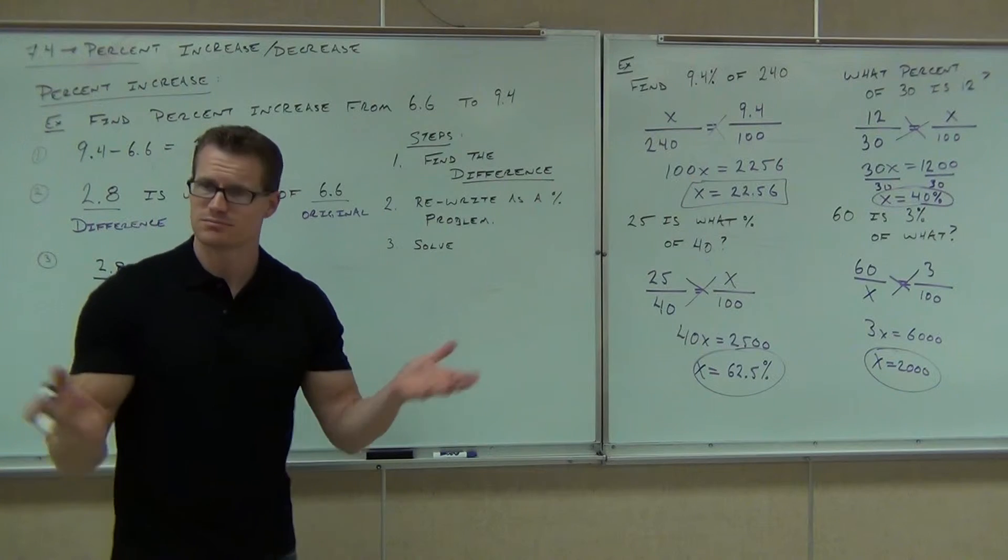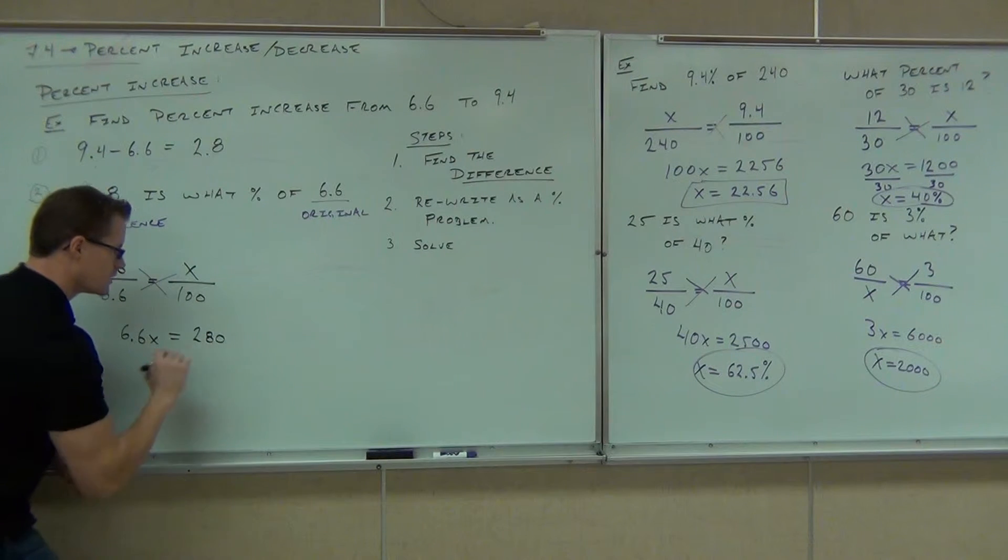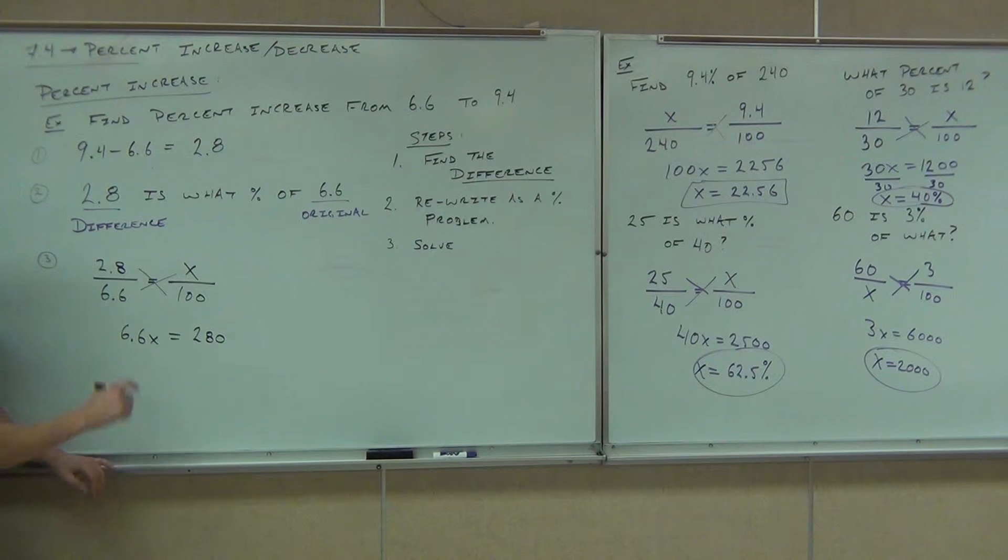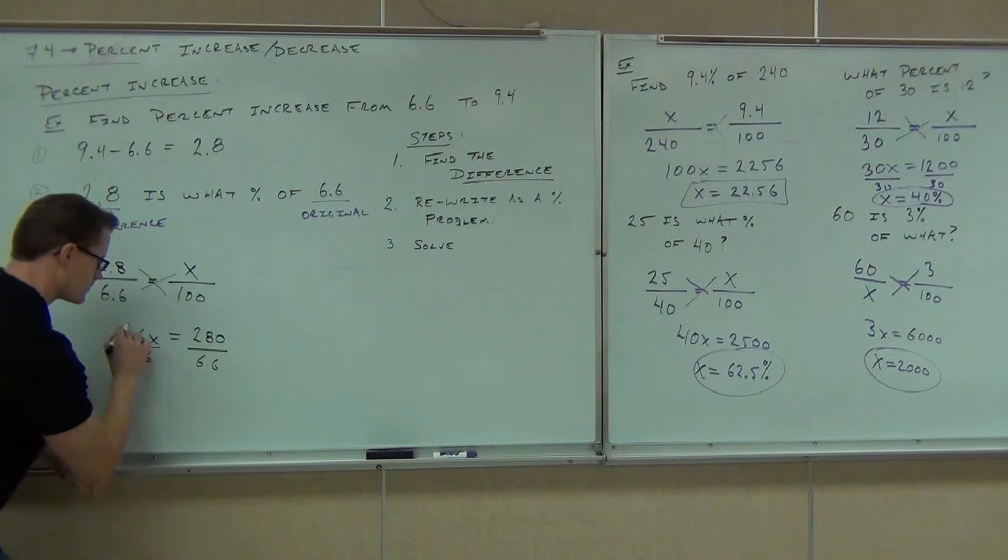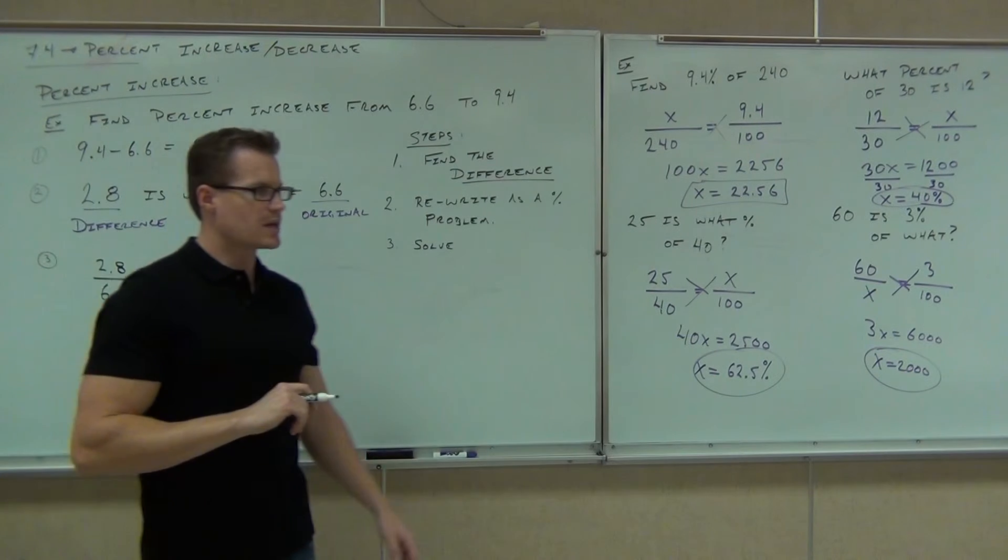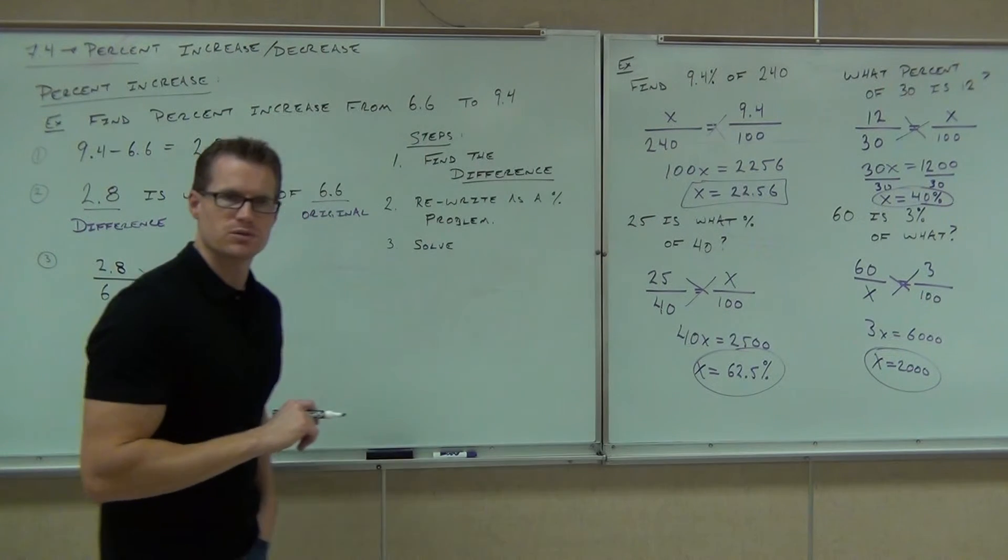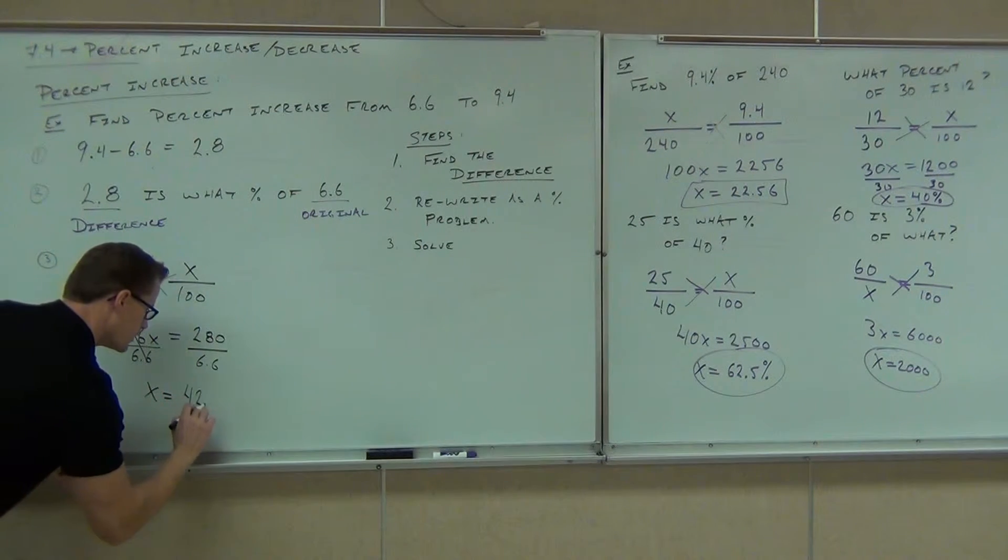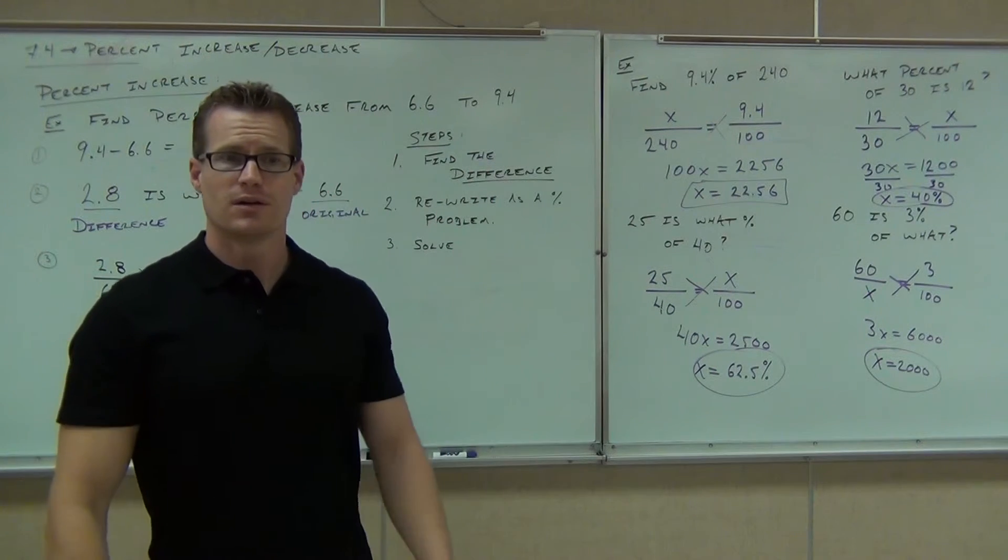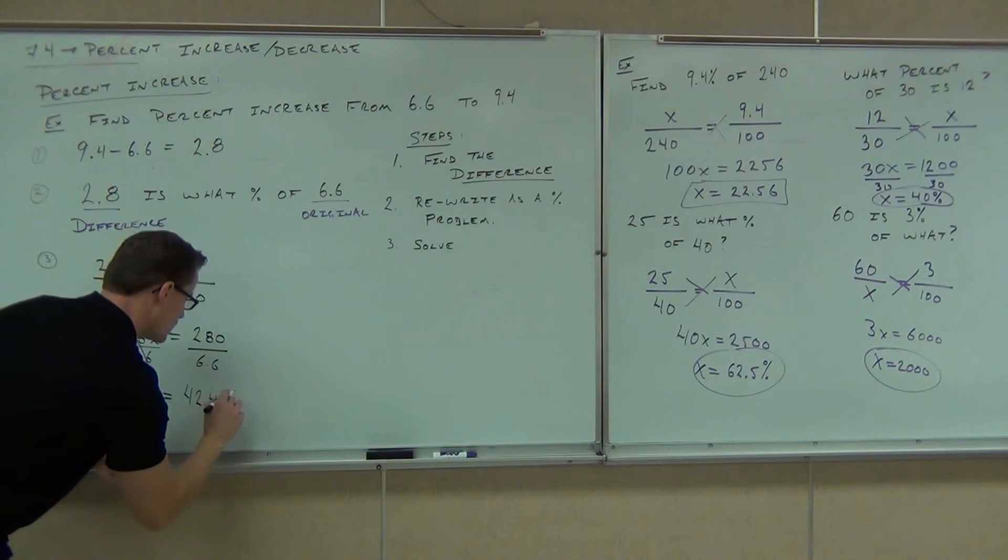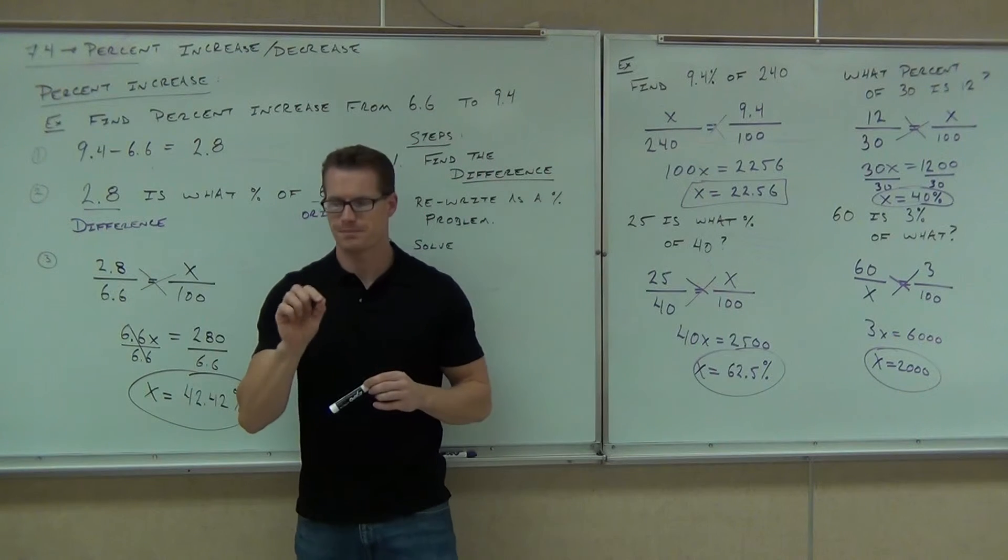You got calculators, right? 6.6X equals 2.8 times 100 is going to give you 280. If we divide by 6.6, X equals, did you get that as well? 42.42. How many people got 42.42? What is that? Is that people? Percent. That's a percent. Or you just approximate with a decimal.